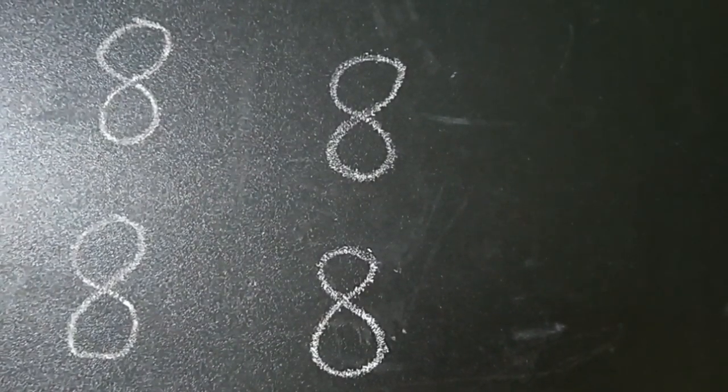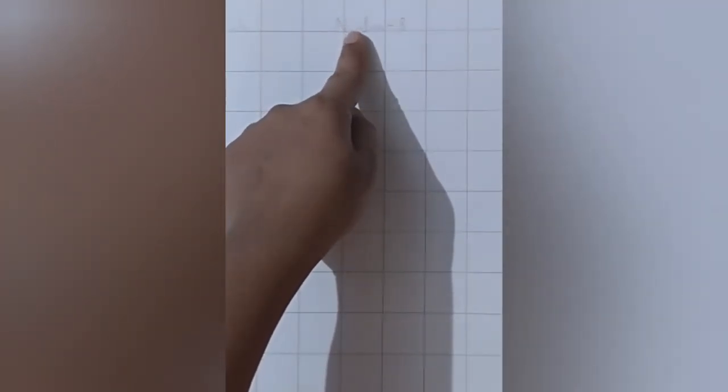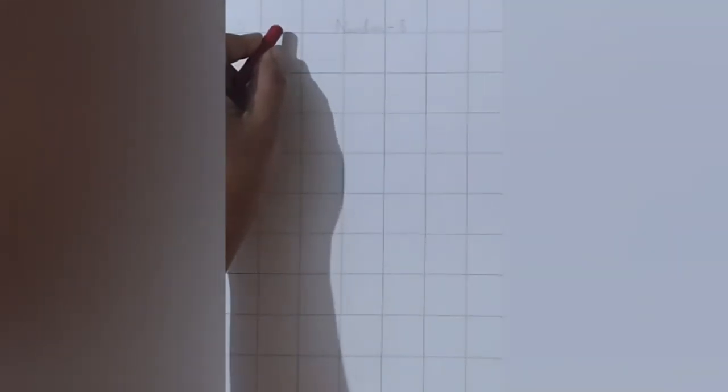Now we will write in the notebook. Here on the top we write the date and the topic number 8. Below in the first square we will write number 8. So from the top you make a backward curve, turn, go up making a curve, turn, go up making a curve and join. Number 8.